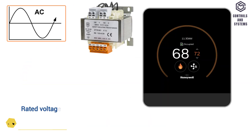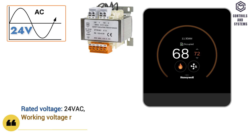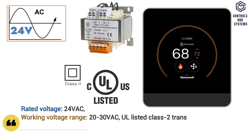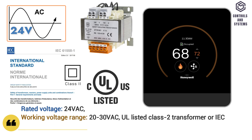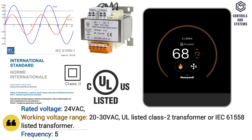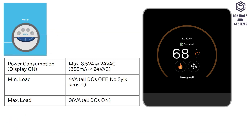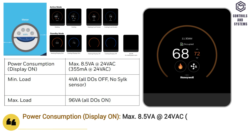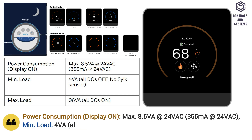Electrical Data. Working voltage range is 20 to 30 volt AC. Requires a UL listed Class 2 transformer or IEC listed transformer. Frequency is 50 or 60 hertz. Power consumption is maximum 8.5 VA, minimum load is 4 VA, and maximum load is 96 VA.